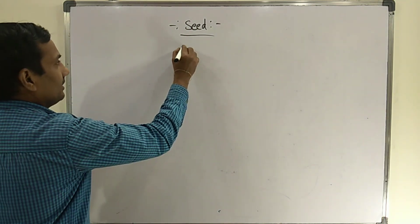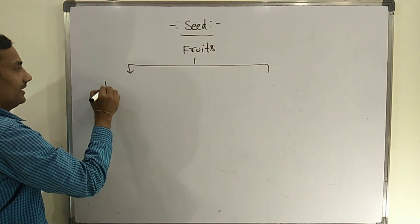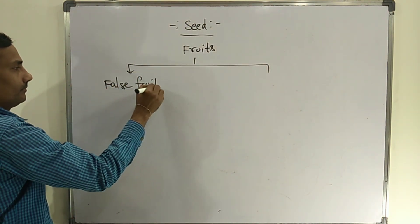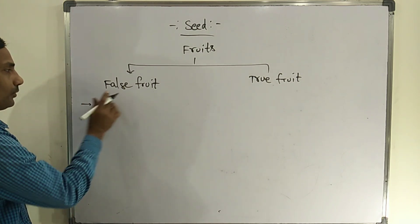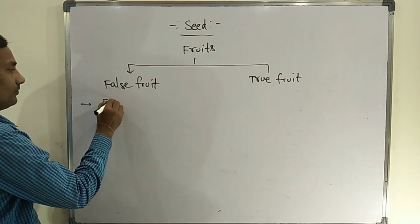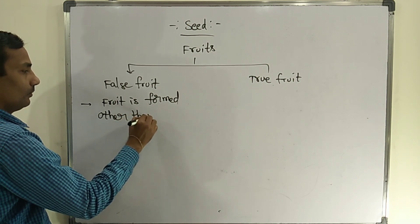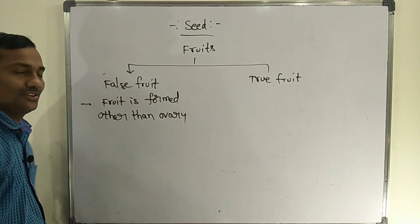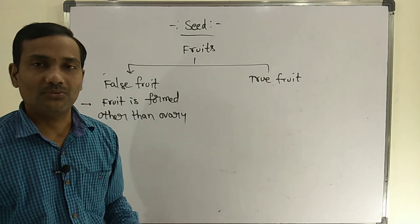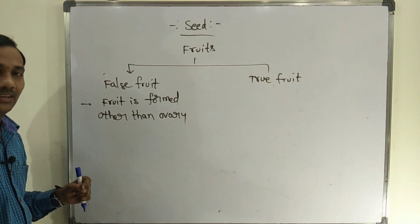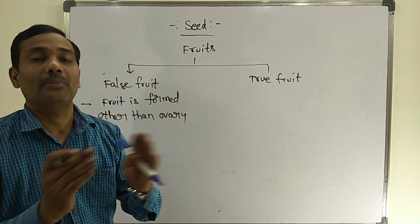Fruits are broadly divided into two types: false fruits and true fruits. If the fruit is formed from a part other than the ovary, such as the thalamus or pedicel, such fruits are called false fruits. In the majority of plants, fruits are formed because of the ovary, and those are called true fruits.